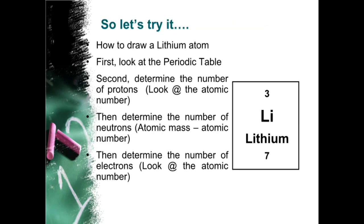So let's try it. How to draw a lithium atom. First, look at the periodic table. Second, determine the number of protons. Look at the atomic number. Then determine the number of neutrons. Atomic mass minus atomic number. Then determine the number of electrons. Look at the atomic number.